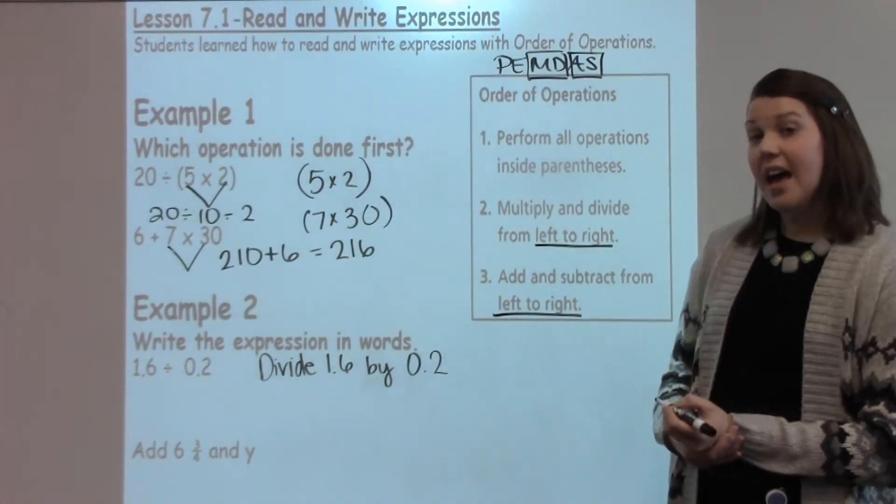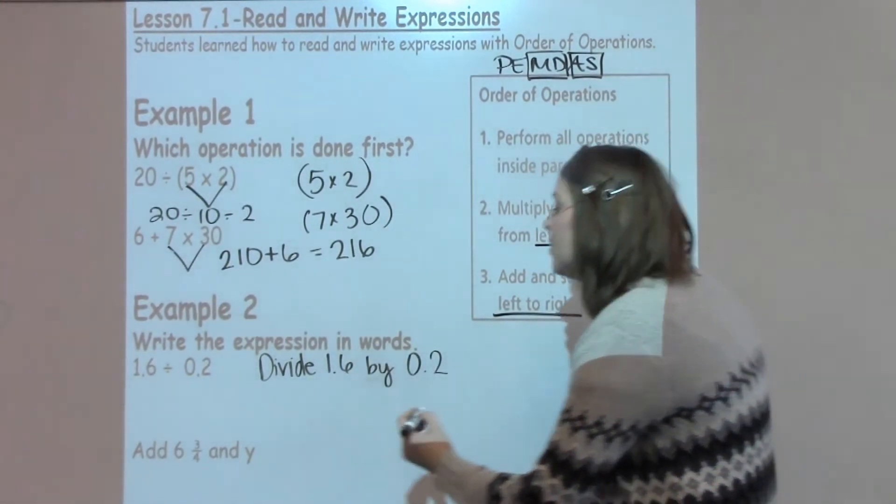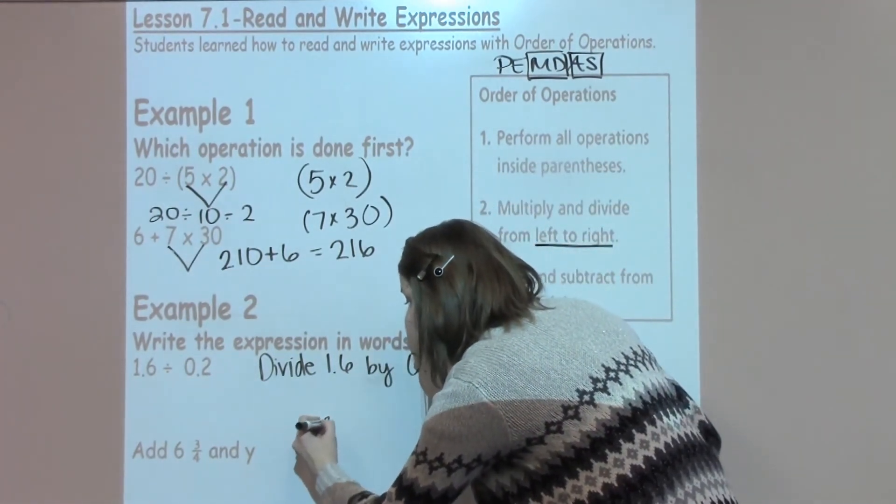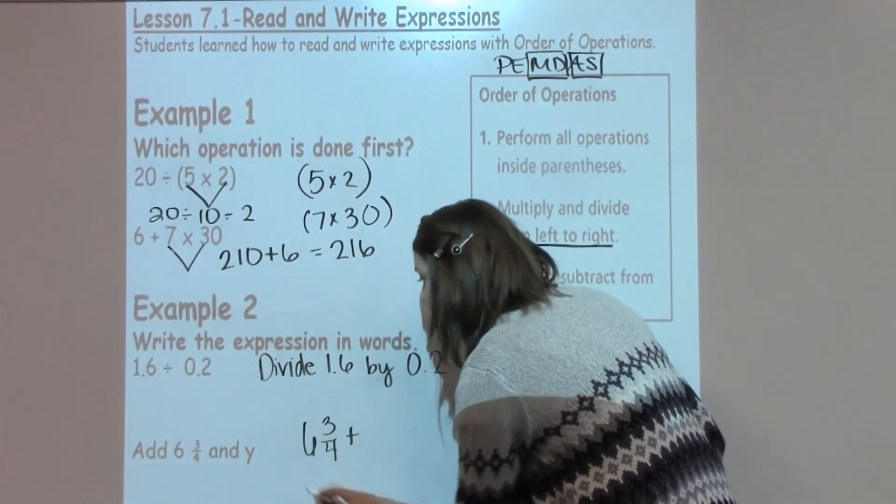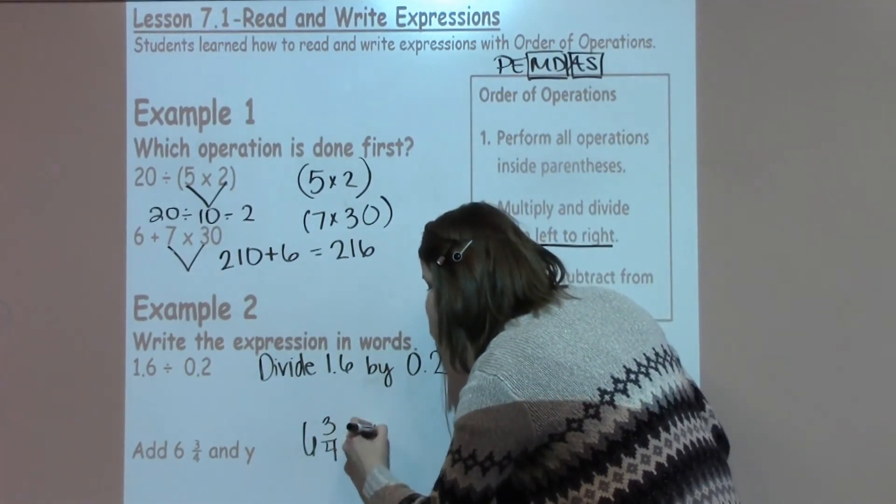The next one says add 6 and 3 fourths and y, so I'm going to go ahead and write down 6 and 3 fourths, addition gives me a plus sign, and y.